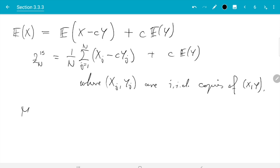And then we know mean squared error of that estimator is 1 over n variance of x minus c y. And now that variance depends on c and we just need to choose c to make that as small as we can.